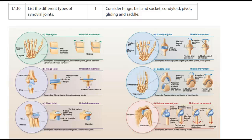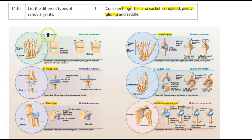This screencast is looking at the different types of synovial joints. We'll be considering a hinge joint, a ball and socket joint, a condyloid joint, a pivot joint, a gliding joint — which here is referred to as a plane joint — and a saddle joint.